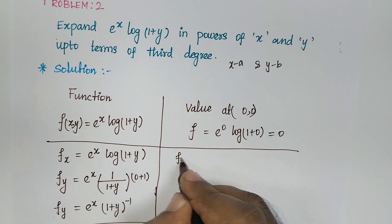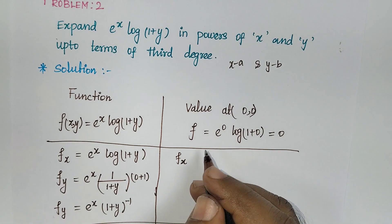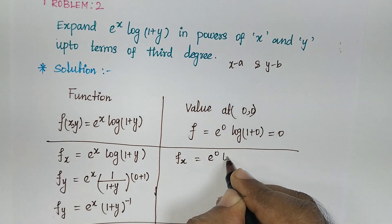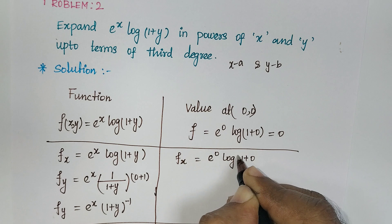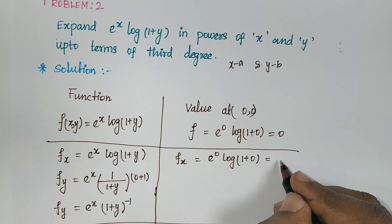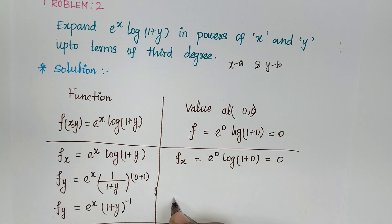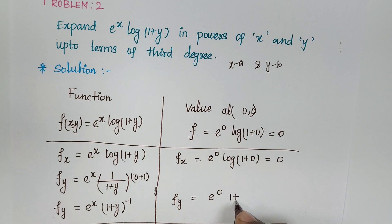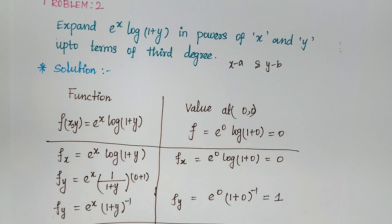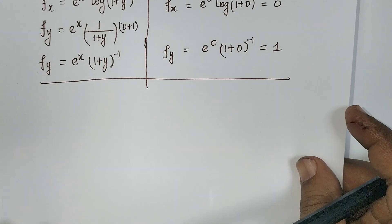Now substitute the point (0, 0). For fx: e^0 * log(1 + 0) = 1 * 0 = 0. For fy: e^0 * (1 + 0)^(−1) = 1 * 1 = 1. So fx at (0,0) is 0, and fy at (0,0) is 1. We have now identified the first degree values.